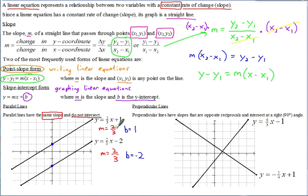What the parallel lines have in common is their slope of positive two-thirds. The numerator tells you to go up or down — positive 2 means up 2. The denominator tells you to go right or left — positive 3 means right 3. Both lines follow the same slope direction of up 2, right 3, which is what causes them to be parallel: same slope, different Y-intercepts.